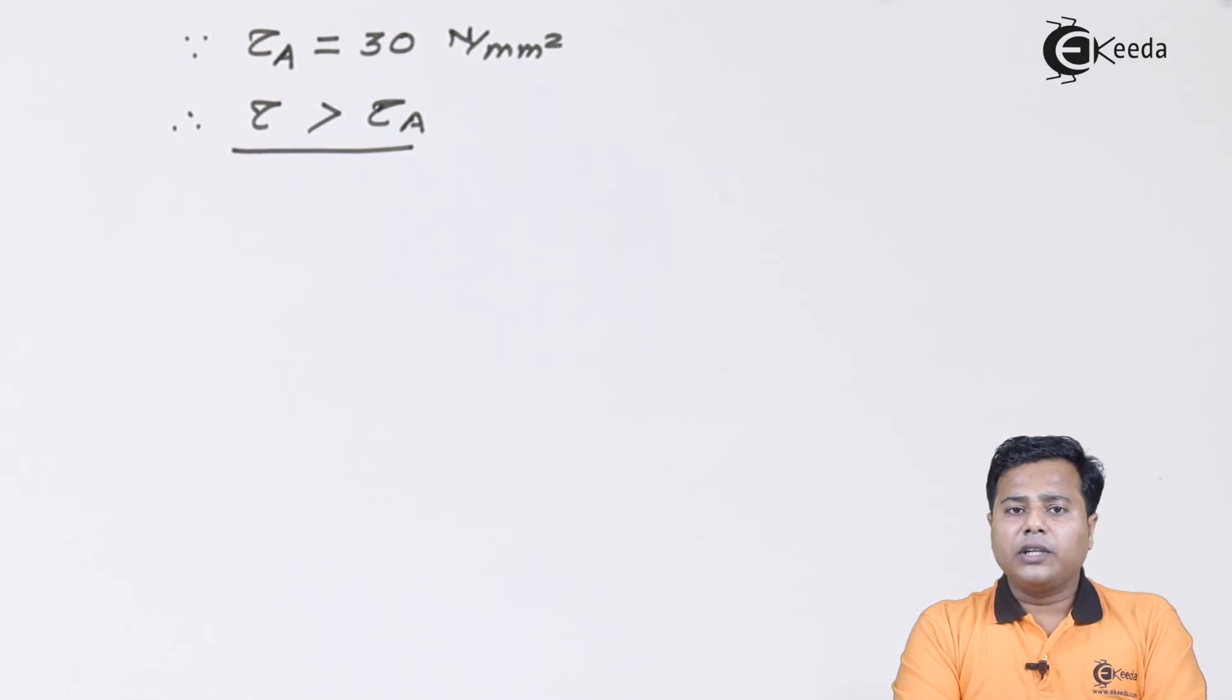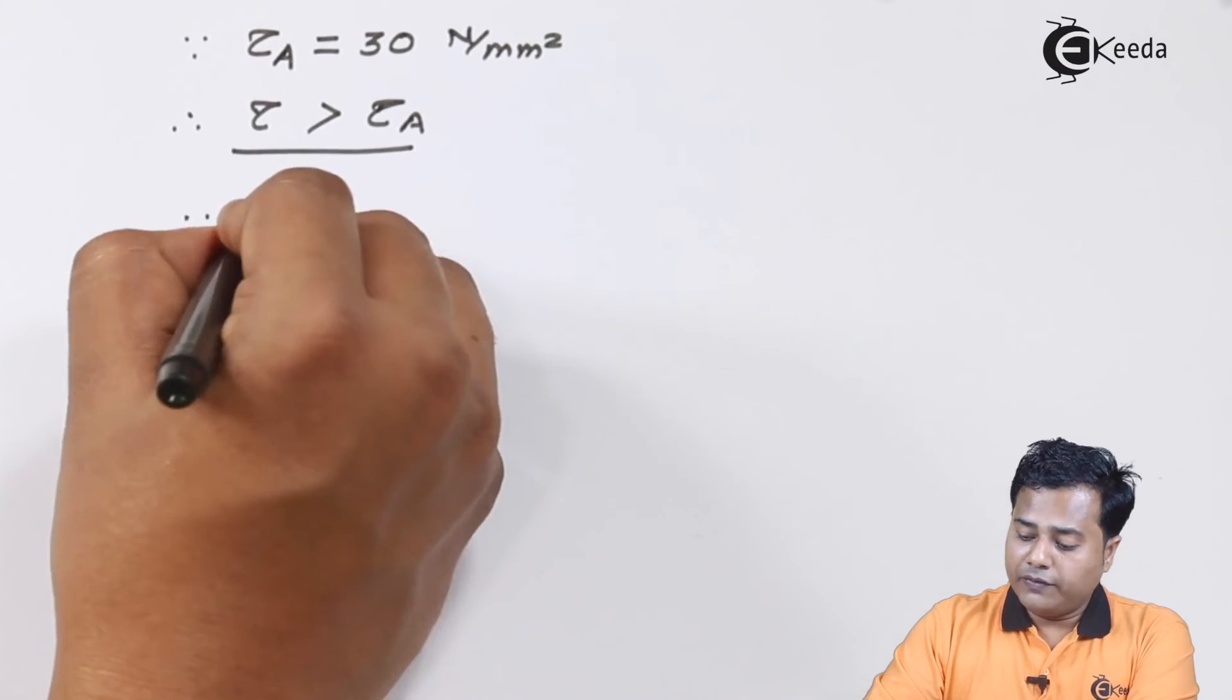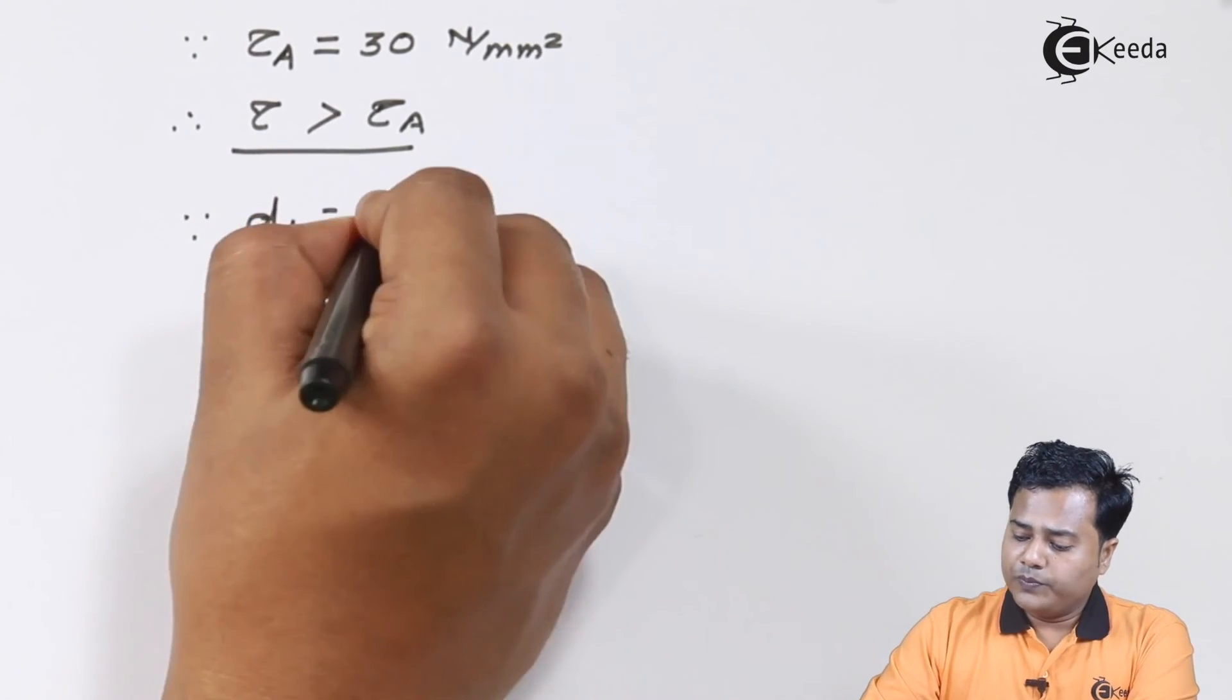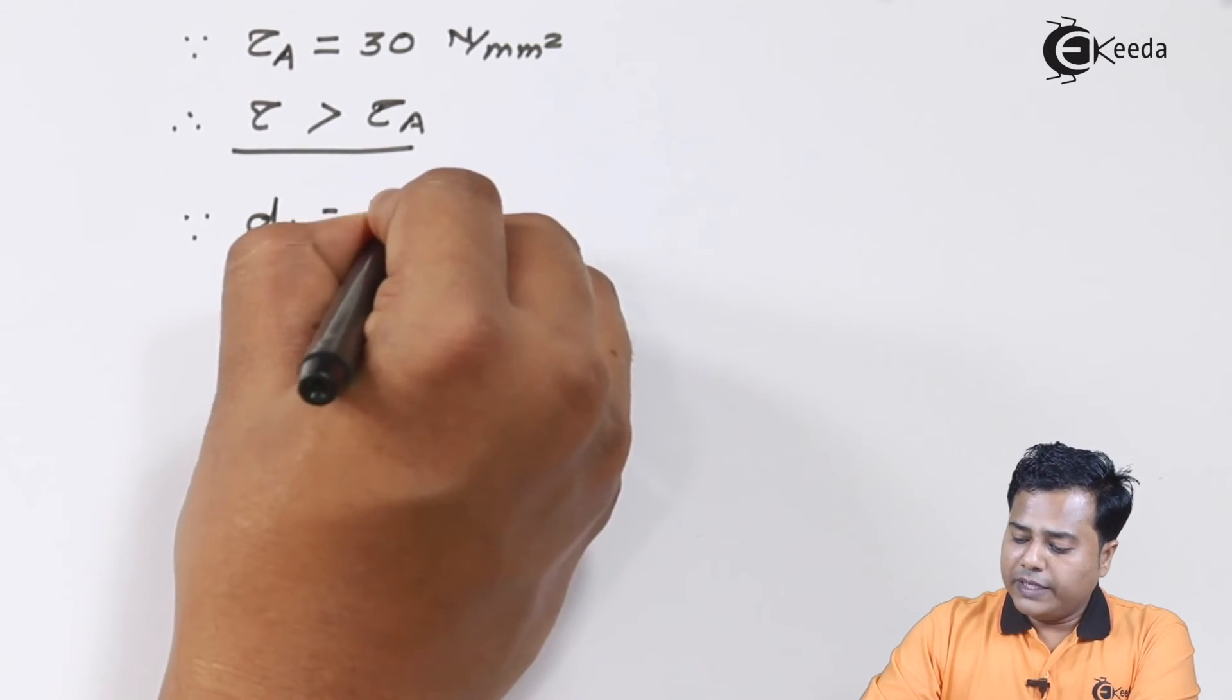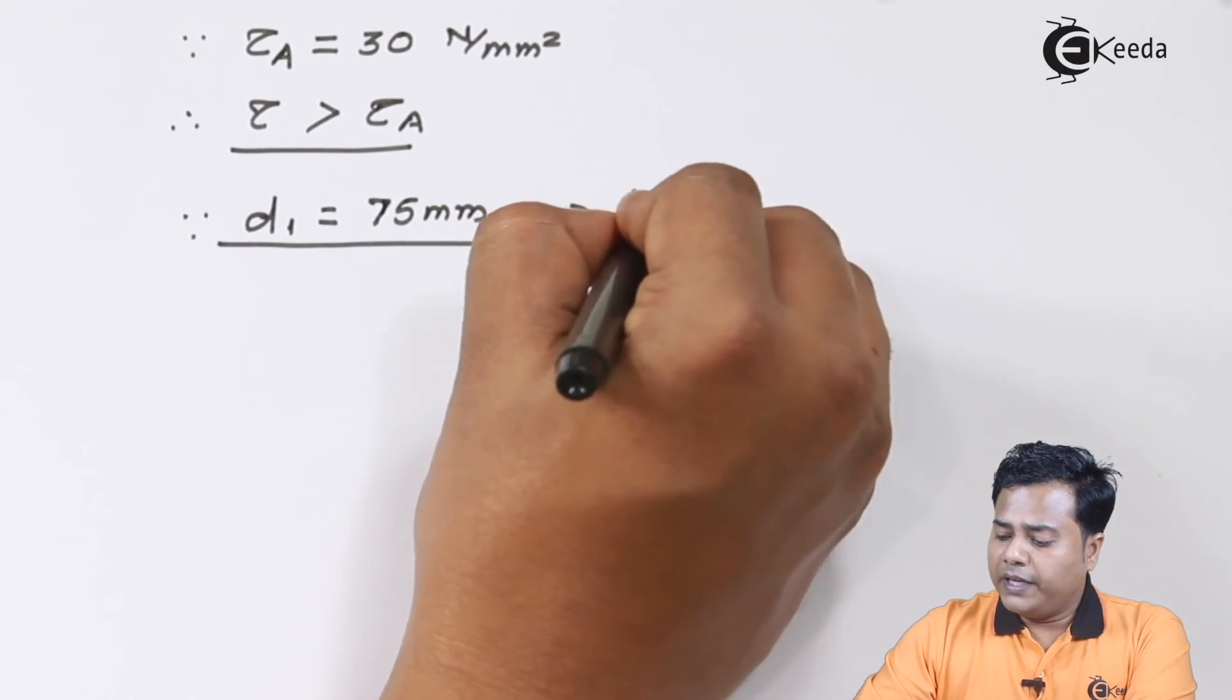We need to change the diameter value. The only diameter value that we have as of now in case of eye end is d₁ equal to 75 millimeter, but this is failing under shear.